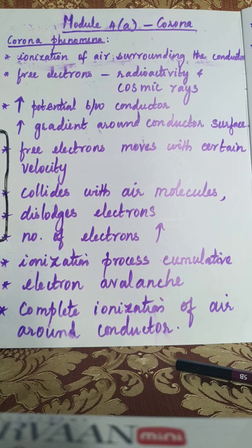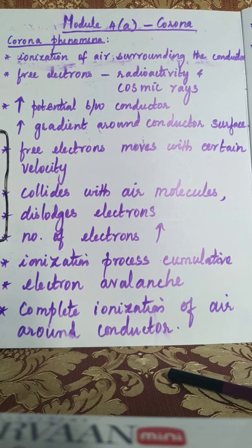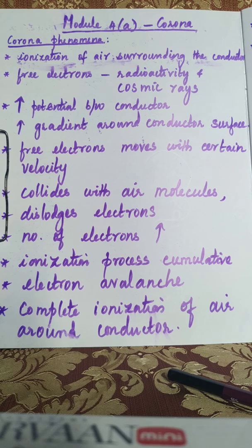Corona is nothing but the ionization of air surrounding the conductor. In the atmosphere, there will already be some free electrons existing due to radioactivity and cosmic rays.